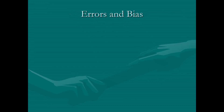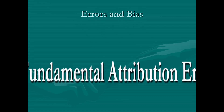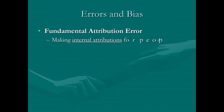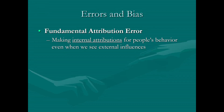One of the most classic errors of all time is something called the fundamental attribution error. Basically, this means that we are making internal attributions for people's behavior even when we can see external influences or those external influences could be in play. It's like we're focusing more on the internal things but ignoring the external influences.